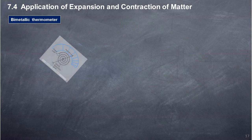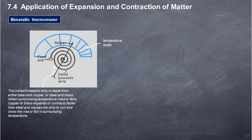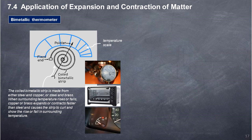Bimetallic thermometer: typically used to measure temperatures between minus 65°C to 430°C. It uses a bimetallic strip which converts temperature into mechanical displacement. The bimetallic thermometer is designed to be less accurate but a more rugged measuring device, mainly used in industry. The coiled bimetallic strip is made from either steel and copper, or steel and brass. When surrounding temperature rises or falls, copper or brass expands or contracts faster than steel, causing the strip to curl and show the rise or fall in temperature. Common applications include temperature gauges in industry, home appliances such as electric ovens, and car radiators to show engine temperature.